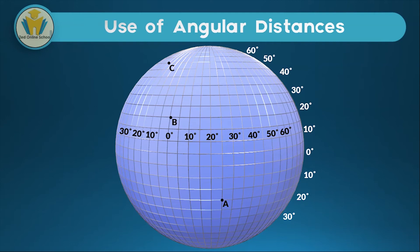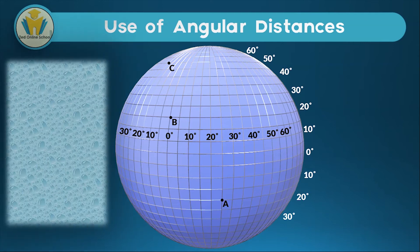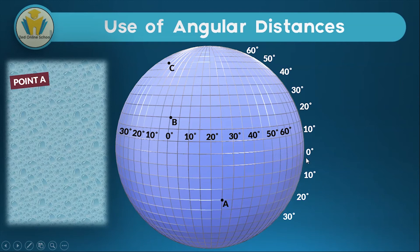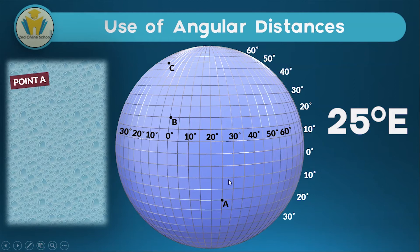With these labels available, we can try to use angular distances to locate some points on this diagram. We're going to have points A, B and C, starting with A. When locating point A, just like we said, we're going to start with the value of the latitude then end with the value of the longitude. Point A lies on the latitude in between 10 degrees and 20 degrees. Looking at the scale, it's moving from 0 to 5 to 10 to 15. Therefore point A lies on 15 degrees south while it lies on 25 degrees east, and the location of point A will be written as follows.